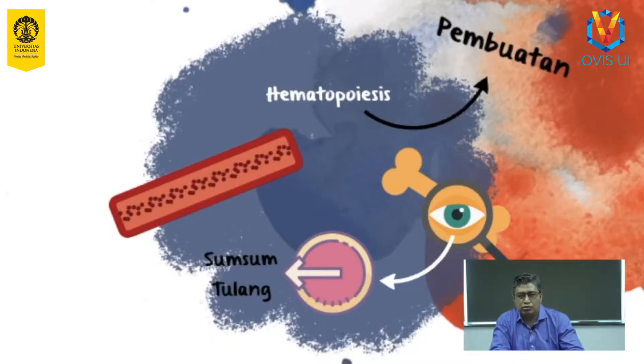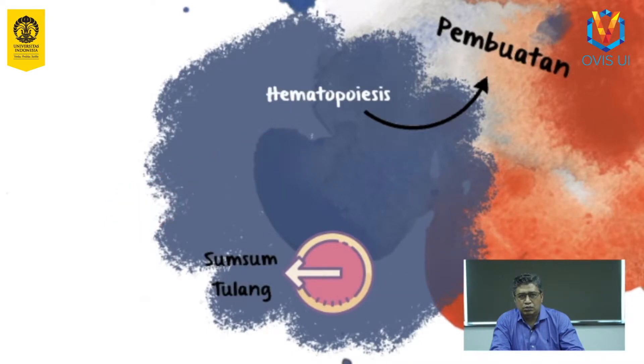Pada pembahasan pertama, kita akan mencari tahu lebih dalam tentang pembuatan sel darah di sumsum tulang. Jika kita memotong tulang secara melintang, maka kita akan melihat struktur berongga dan lunak yang terdapat pada ruangan di dalam tulang. Yang kita lihat tersebut adalah struktur sumsum tulang. Sumsum tulang kira-kira memiliki berat kurang lebih 4% dari total berat badan kita. Sebagai contoh, jika kamu memiliki berat badan 65 kg, maka massa sumsum tulang kamu kurang lebih adalah 2,6 kg.